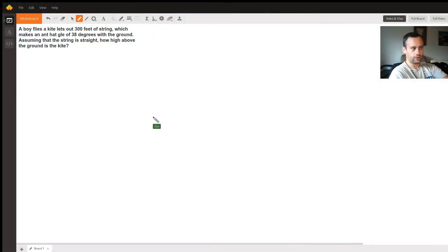Your question is: A boy flies a kite and lets out 300 feet of string, which makes an angle of 38 degrees with the ground. Assuming that the string is straight, how high above the ground is the kite?